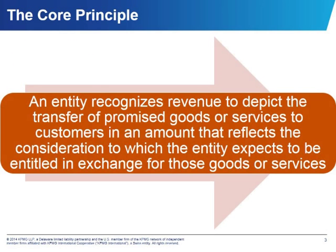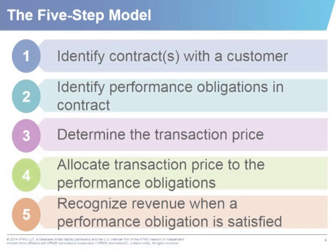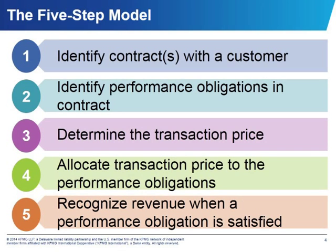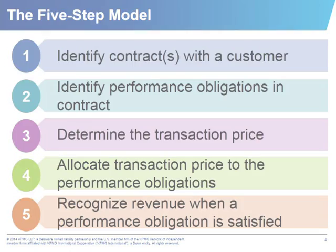The core principle of the revenue standard is that an entity recognizes revenue to depict the transfer of promised goods or services to customers in an amount that reflects the consideration to which the entity expects to be entitled in exchange for those goods or services. Because you're listening to the podcast, I assume you have some familiarity with the five steps. I would just say let's pay special attention to steps two and four on identifying the performance obligations in the contract and allocating the transaction price to the performance obligations.